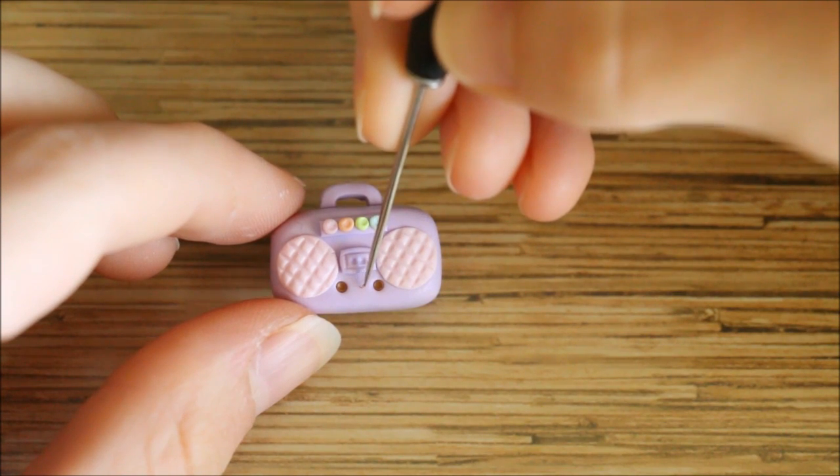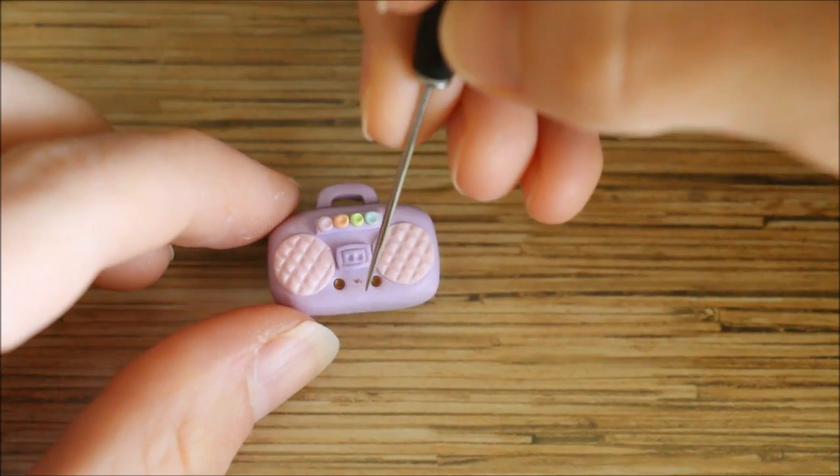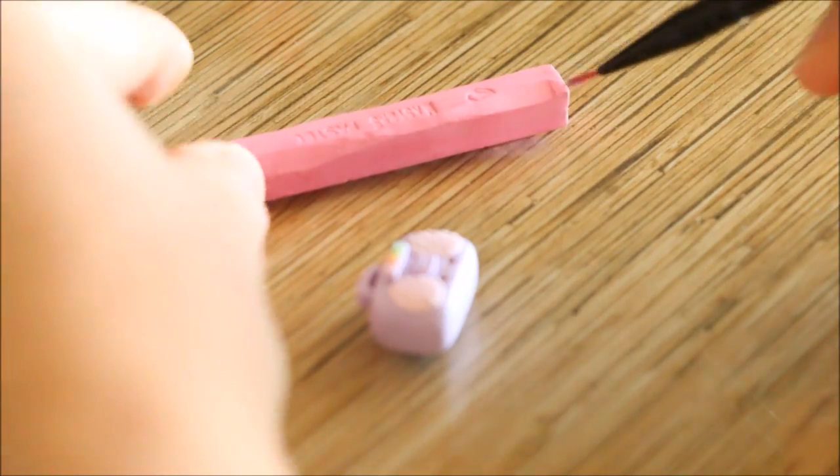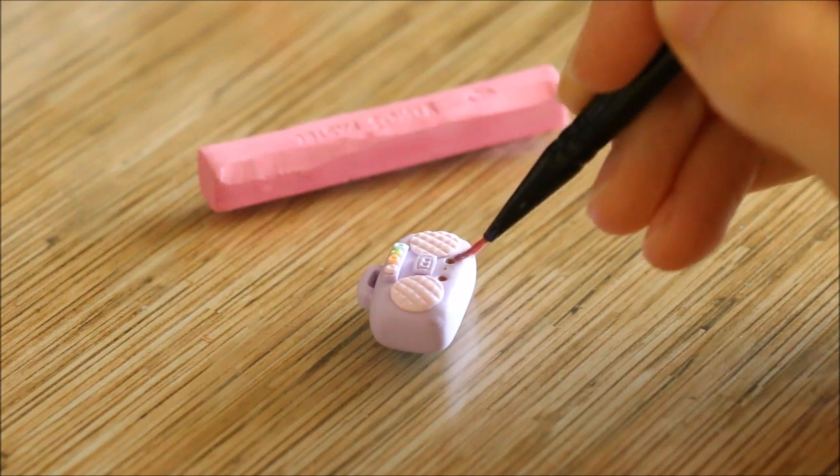For the mouth I curved a small piece of the brown clay and then attached it using my needle tool. Finally I used a pink chalk pastel and a small brush to apply the cheeks beside each of the eyes.